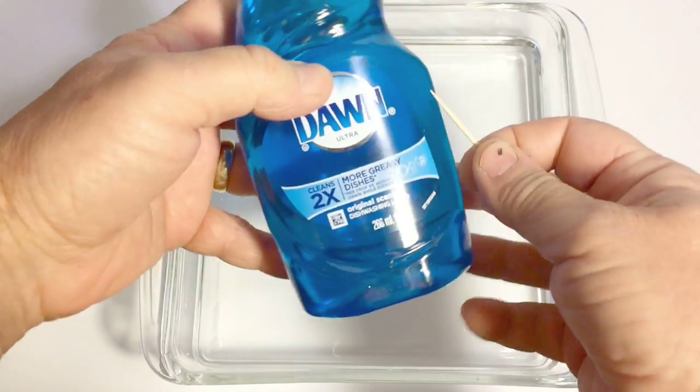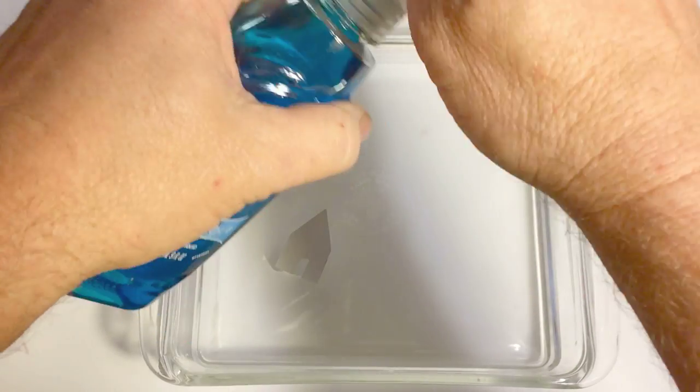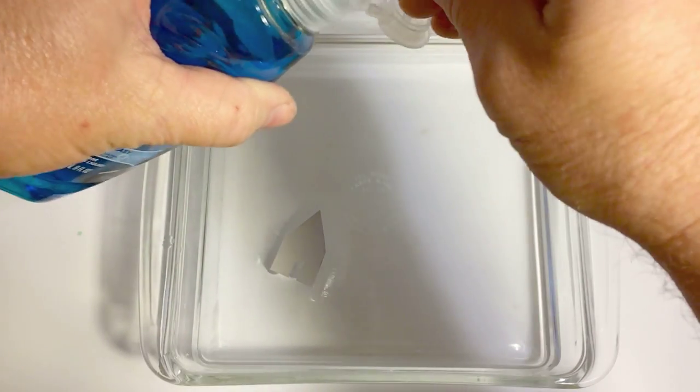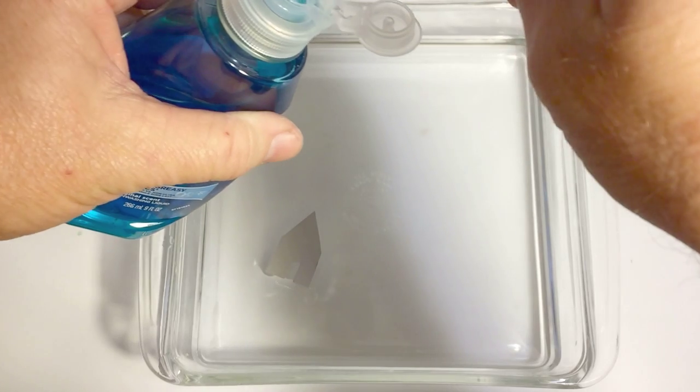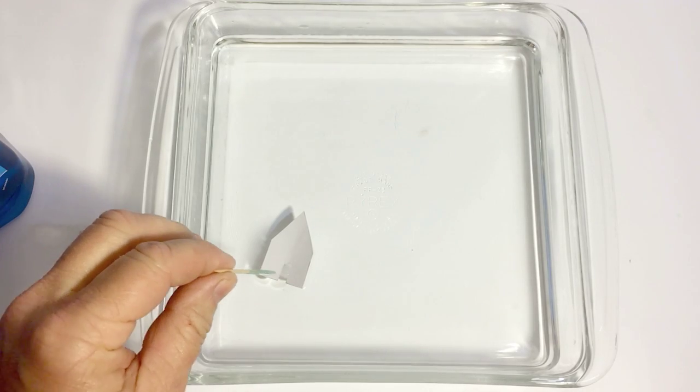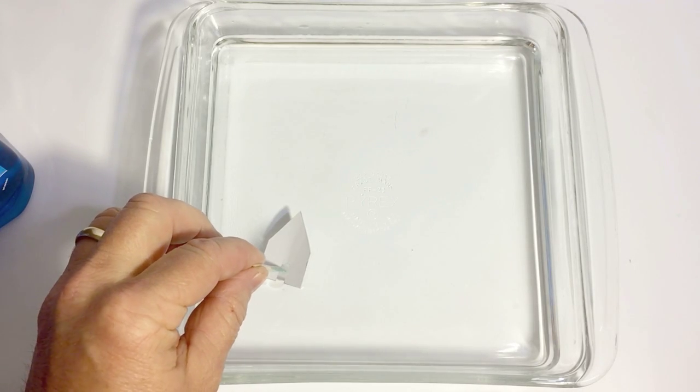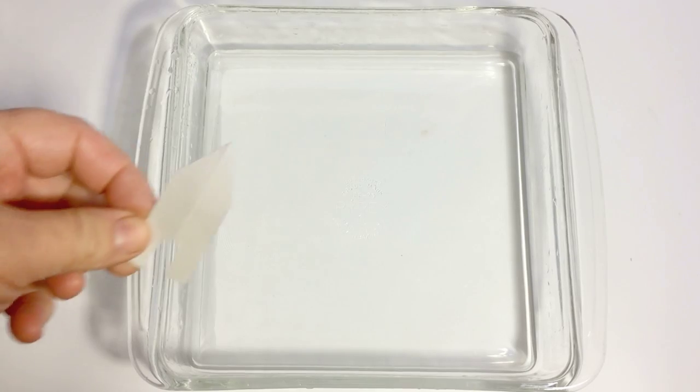Then you're going to take your dish soap and place your toothpick just on the tip of it to get a small amount of soap on there. And then you're going to place that right in the middle of the back of the boat. And there it goes. Soap powered boat.